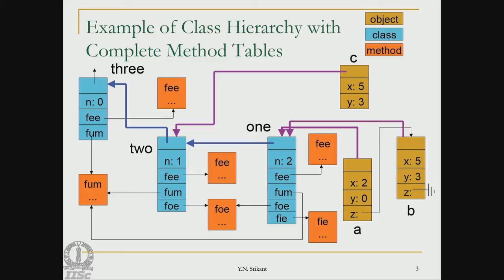To do a bit of recap, this is the diagram with class hierarchy that I showed you last time. There are 3 classes: 1, 2, and 3. Class number 3 is at the highest level in the hierarchy, 2 derives from 3, and 1 derives from 2. This is the way the hierarchy is maintained.